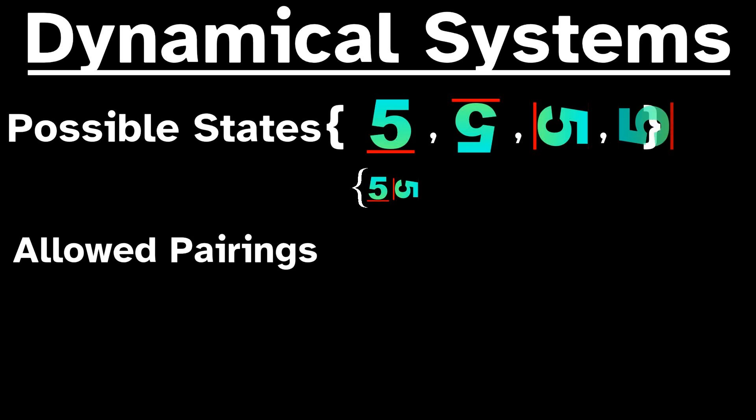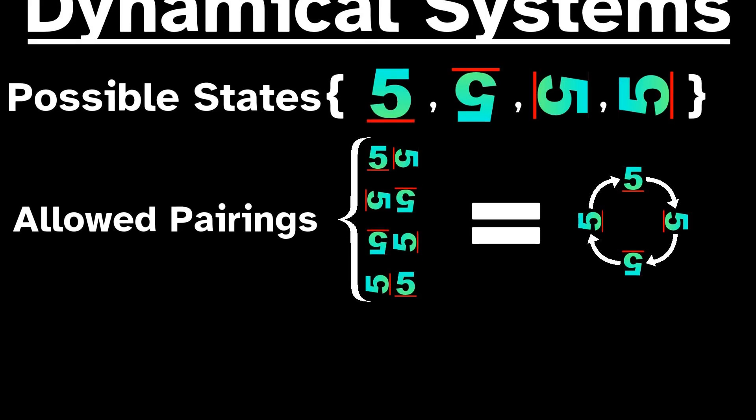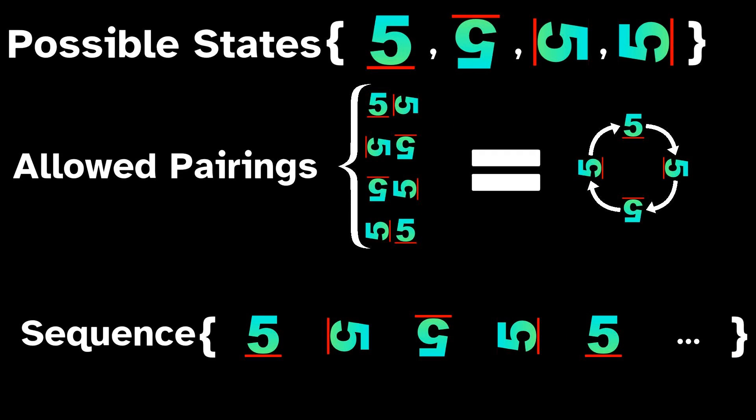Symbolic dynamics is a subfield of dynamical systems, so let's begin there. A dynamical system can be a lot of things, but ultimately, it's a set of possible states together with a rule that determines how one state evolves into another.